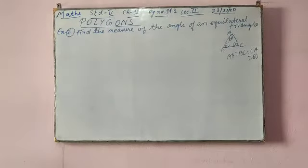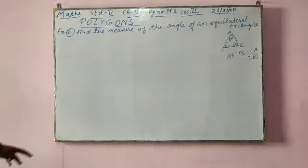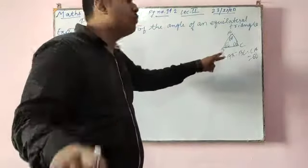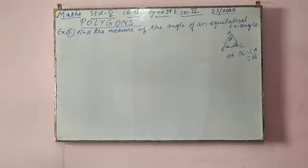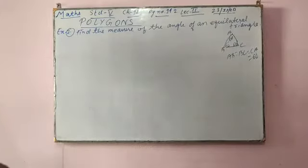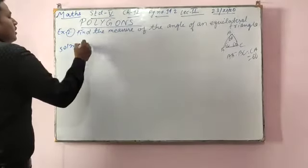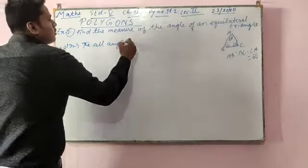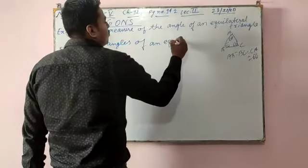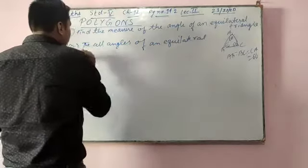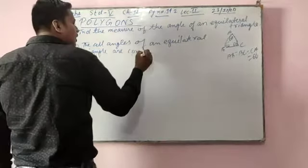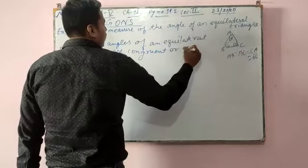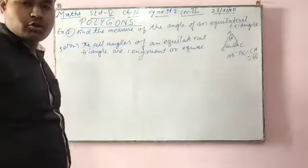So now we will find the solution. We know that all angles of an equilateral triangle are congruent — meaning equal. We know that all angles of an equilateral triangle are equal.